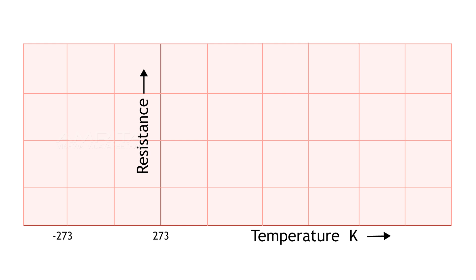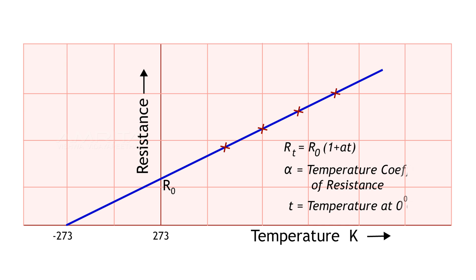A graph is plotted with the temperature along the x-axis and resistance along the y-axis. Then the graph is extrapolated to cut the x-axis at absolute zero, i.e., minus 273 degrees Celsius.